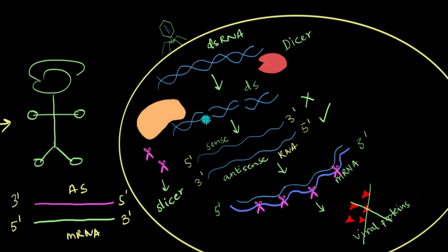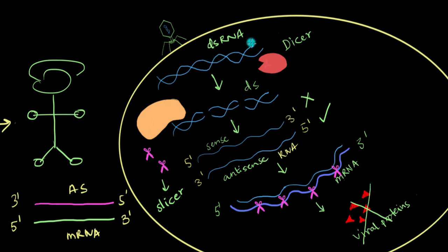Not only are we eliminating the double-stranded RNA that the virus injected into our cell, but we're also getting rid of any mRNA that can possibly produce viral proteins. So if this virus was sneaky enough to still have some mRNA produced, we are also getting rid of that. No mRNA, no double-stranded RNA, no viral proteins — absolutely no virus babies.